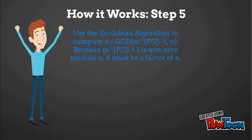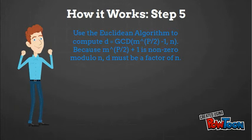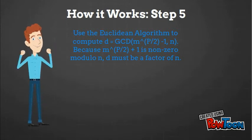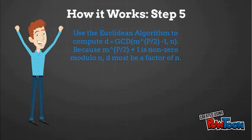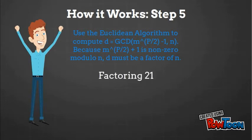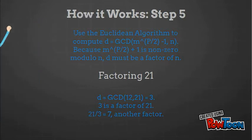Finally, John uses the Euclidean algorithm to calculate the greatest common divisor between m to the power of p divided by 2 minus 1 and n. Because m to the power of p divided by 2 plus 1 is a non-zero modulo n, d must be a factor of n. He calculates the greatest common divisor of 12 and 21 to be 3, which is a factor of 21. And this concludes the team's work.